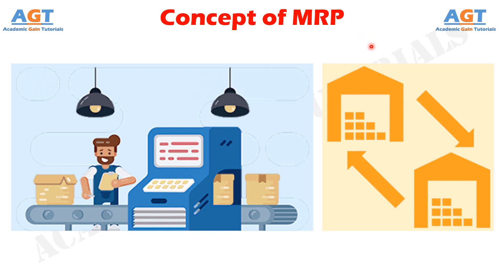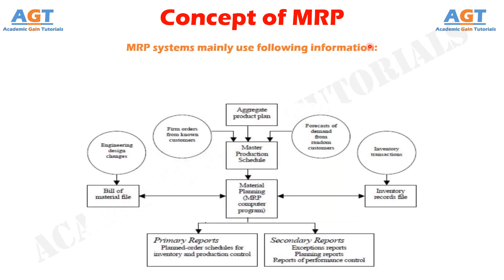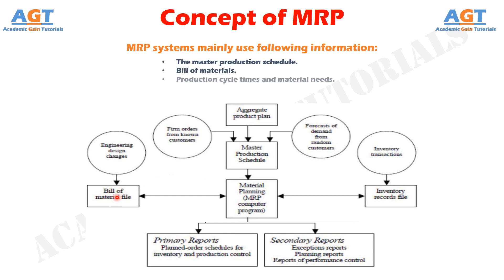Material requirements planning systems mainly use the following information to determine what material should be ordered and when: the master production schedule, which describes when each product is scheduled to be manufactured; the bill of materials, which lists exactly the parts or materials required to make each product; and production cycle times and material needs at each stage of the production cycle.